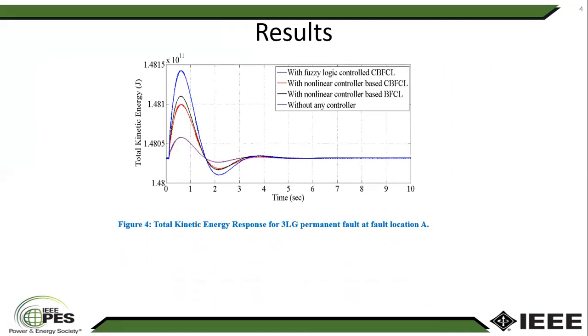As a simple result, this is the total kinetic energy response of all the synchronous generators in the system for a three phase to ground fault at a specific location. From the result we can see that the purple line, which indicates our fuzzy logic control CBFCL, is stabilizing earlier compared with the other considered operation conditions.